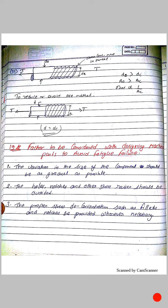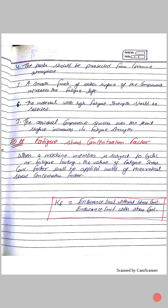Factors to be considered when designing machine parts to avoid fatigue failure: The variation in size of the component should be as gradual as possible. Holes, notches, and other stress risers should be avoided. Proper stress relievers such as fillets and notches should be provided wherever necessary. Parts should be protected from corrosive atmosphere. A smooth finish of the outer surface increases fatigue life. Material with high fatigue strength should be selected. Residual compressive stress over the part surface increases its fatigue strength.